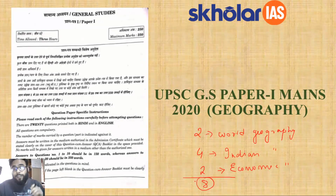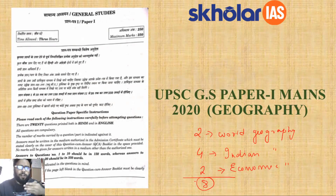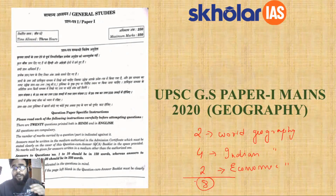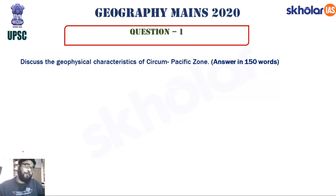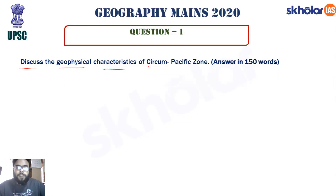In today's session, we will go through each of these eight questions one by one and discuss the points you could have written for each question. Let us begin with the first question from world geography: 'Discuss the geophysical characteristics of the Circum-Pacific Zone.'